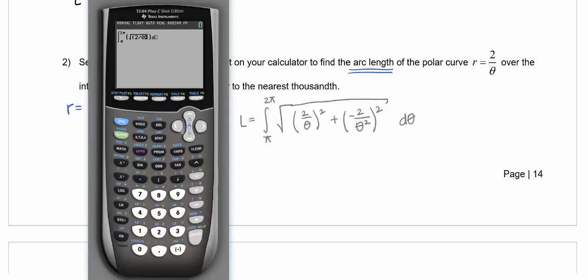2 over theta quantity squared, plus parentheses, negative 2 over theta squared quantity squared, all with respect to theta. And again, if you know that that's going to be 4 over theta to the 4th, you could certainly write that as well. Anything equivalent is fine. And here's my arc length.